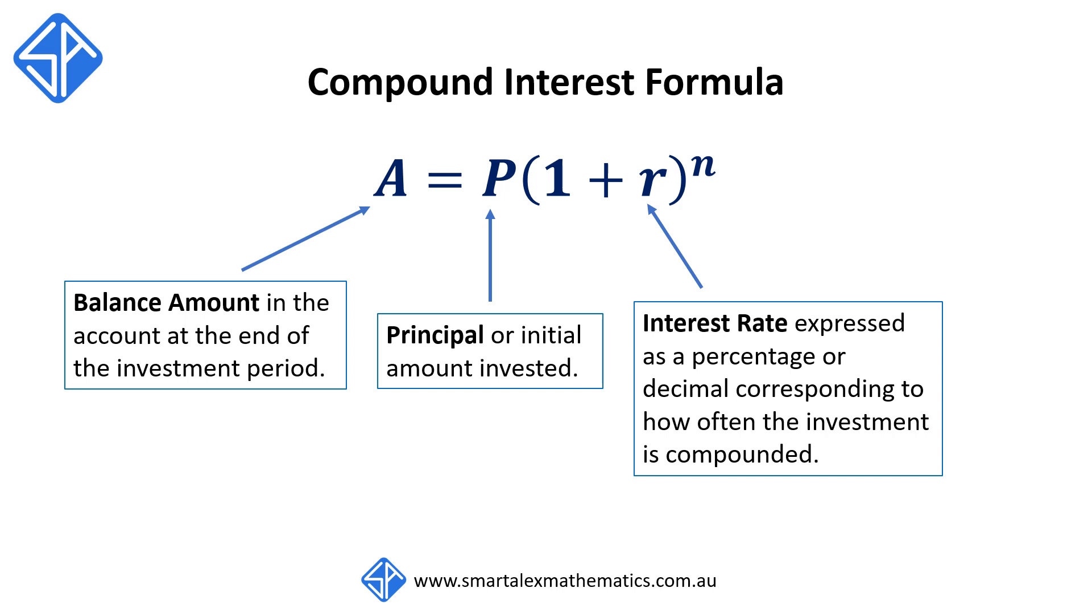For example, if we compound the investment every year, then the interest rate should be expressed per annum. If the investment is compounded per quarter, then R should be expressed as an interest rate per quarter.